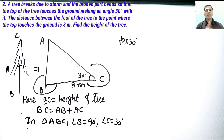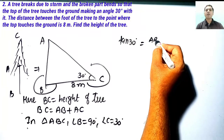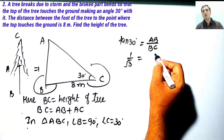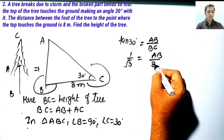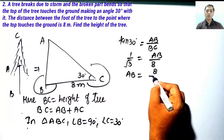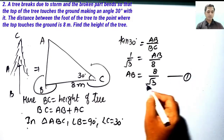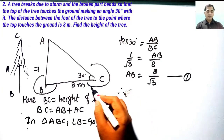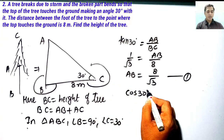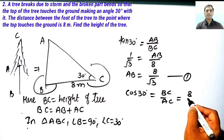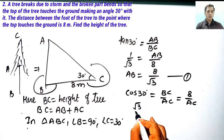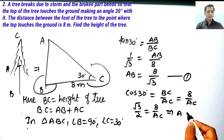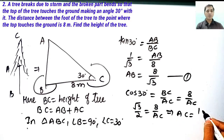Tan 30° = AB / BC, so 1/√3 = AB / 8, giving AB = 8/√3. This is result 1. For the hypotenuse AC, we use cos theta: cos 30° = BC / AC, so √3/2 = 8 / AC. Solving, AC = 16/√3. This is result 2.